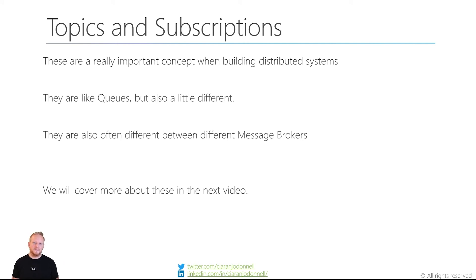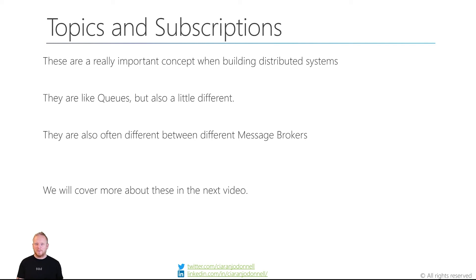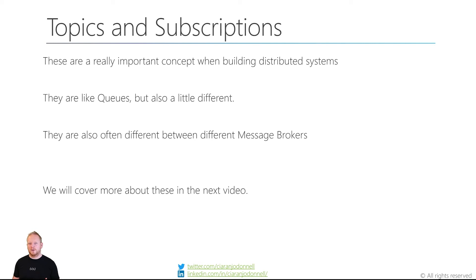The next logical thing to talk about after message queues would be topics and subscriptions. These are really important concepts when we build distributed systems using message brokers. They are like queues in that they queue up messages sent by one application before they get delivered to another, but they're also a bit different — and they differ between different message brokers. More traditional ones like Azure Service Bus, ActiveMQ, or RabbitMQ behave differently from the newer distributed log-type ones like Kafka and Azure Event Hubs. We're going to talk more about topics and subscriptions in our next video.